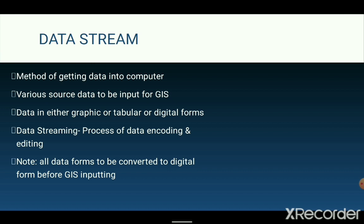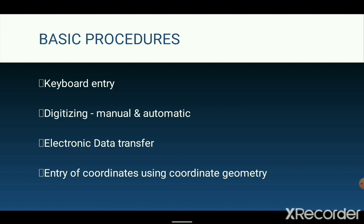Data can be input into GIS using a number of different methods. Maps may be input by digitizing or scanning. Aerial photographs can be scanned into GIS and satellite images can be downloaded from digital media. It should be noted that all forms of data need to be converted to digital form before they can be input into GIS. The basic procedures for inputting spatial data into GIS include keyboard entry, data entry, digitization both manually and automatically, electronic data transfer, and entry of coordinates using coordinate geometry.